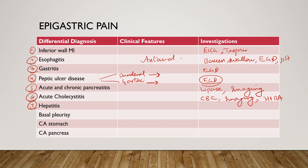Seventh is hepatitis. Hepatitis can present with jaundice and tender hepatomegaly, and it can cause epigastric pain. Workup-wise, you can do LFTs, hepatitis panel, and ultrasound of the liver, gallbladder, and pancreas.